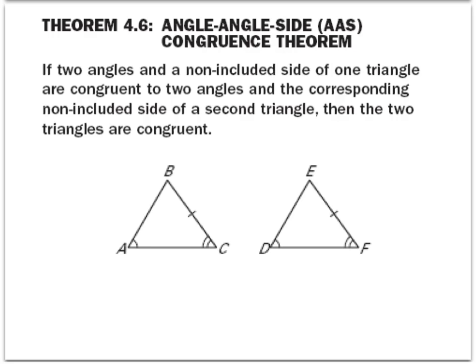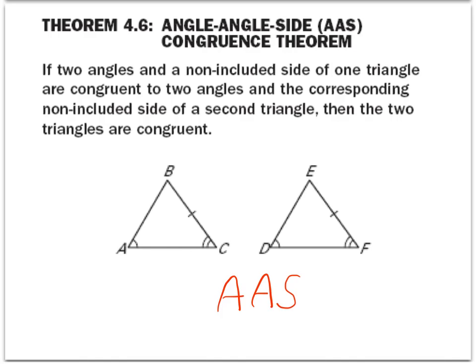At this point, you're probably getting a hang of how to decide if these are congruent using these different theorems. The angle-angle-side congruence theorem means that you need two angles and a side, in the order of an angle, an angle, then a side. So in both of these triangles, we have congruent angles A and D, congruent angles C and F, and then congruent sides CB and FE. Because of that angle-angle-side relationship, we can say that these are congruent by the angle-angle-side congruence theorem.